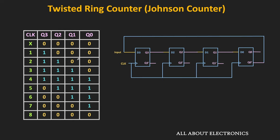Since Q0 is equal to 0, the input to D3 will again be 1. After the second clock pulse, Q3 remains 1 and the remaining bits get right-shifted, making the output 1100. The output of the counter changes at every clock pulse, and after 8 clock cycles the output sequence repeats. So a 4-bit Johnson counter has 8 different states — it is a mod 8 counter. In general, an n-bit Johnson counter has 2N states, so the modulus of an n-bit Johnson counter is equal to 2N.